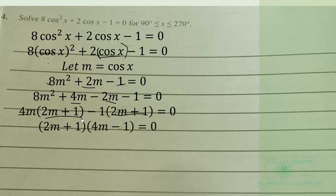So we have 2M plus 1 into 4M minus 1 equals 0. So either of the factors must be equal to 0, so we have M to be equal to negative 1 over 2 or 1 over 4.